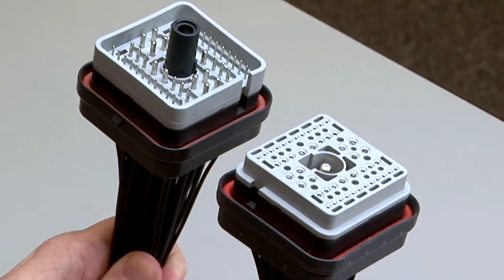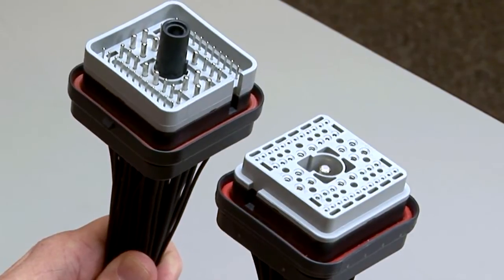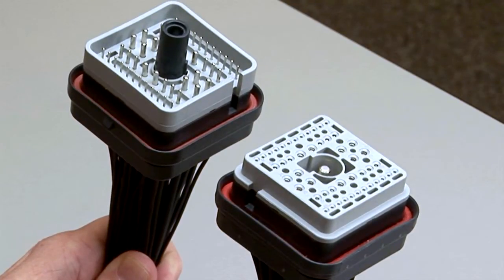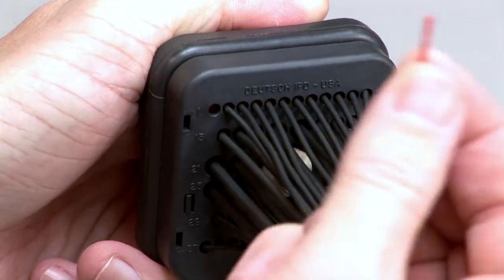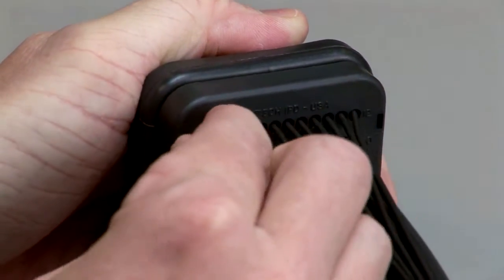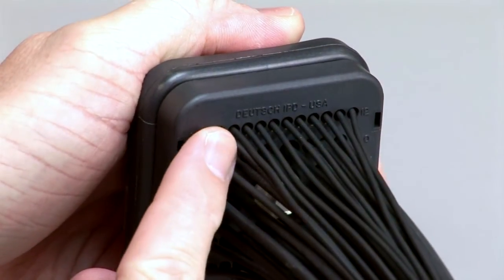Repeat the same process for the receptacle and the plug halves of the connectors. Make sure to insert the contacts into the rear grommet. Please note that if you have open cavities, they will need to be filled with appropriately sized sealing plugs.